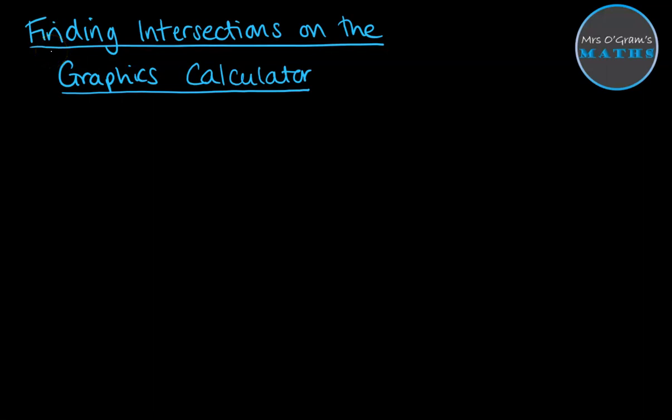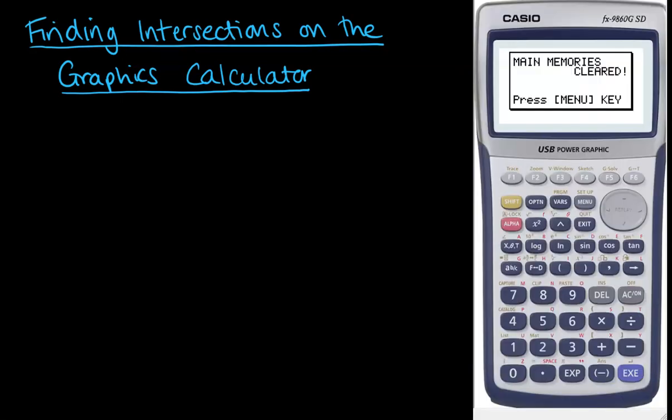Welcome back to Mrs. O'Graham's Maths. Today we're going to look at finding intersections using your graphics calculator. The videos I've done previously have mostly been using Desmos, and I've referred occasionally to the possibility of using your graphics calculator instead. It's a little more clunky but it is possible, so if you're in an exam situation where you don't have access to Desmos, you can use the Casio graphics calculator instead.